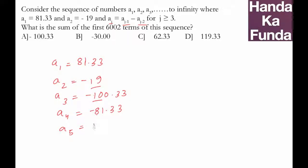a6 will be 19 minus -81.33, which equals 100.33. All you want to do is look at the difference of the previous terms.